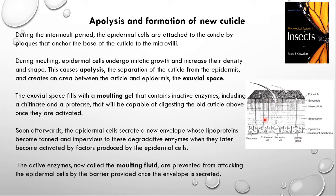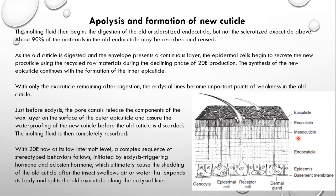These active enzymes can only digest the endocuticular. The epidermis has secreted a new exoskeleton that has the epicuticular outside, and those enzymes cannot act on the epicuticular - but they can work on the endocuticular. So only the older exoskeleton's endocuticular, which is facing the molting fluid, gets digested, whereas the new exoskeleton protects the epidermal layer.